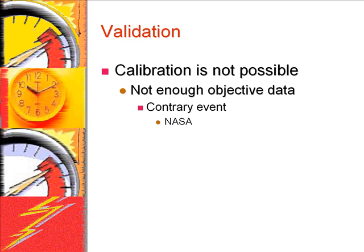The accuracy of the forecast can only be established if, in a large number of days — say 100 days — in which the weather forecast has predicted an 80% chance of rain, it does indeed rain for 80 of those days. Only then can we claim that the weather forecaster is well calibrated and accurate. Obviously, the requirement to observe a large number of similar forecasts makes it difficult to verify the calibration of forecasts of rare events.